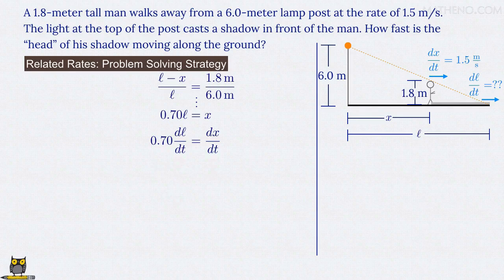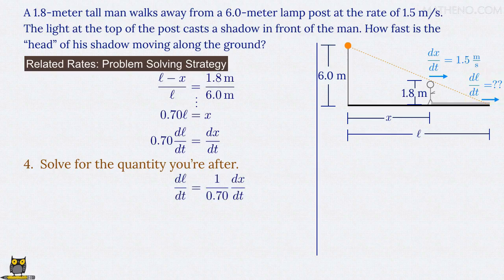Our fourth and final step is to solve for the quantity we're after. We want dl/dt, so let's divide both sides of the last equation by 0.70 to get dl/dt equals 1 over 0.70 times dx/dt. We know that dx/dt equals 1.5 meters per second, so we can make that substitution. And numerically, 1 over 0.70 times 1.5 meters per second is 2.1 meters per second.